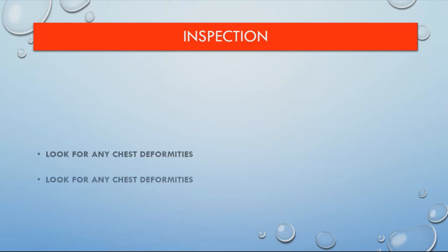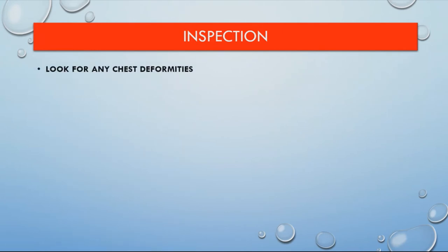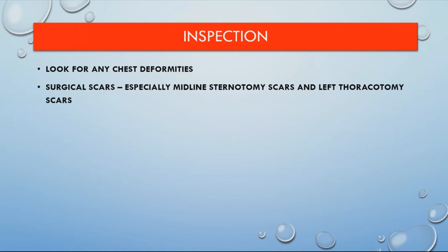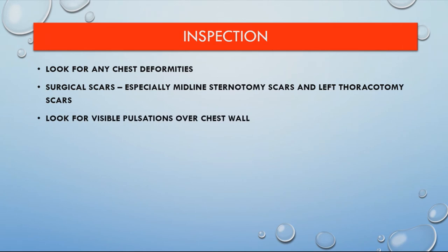Now inspection: first look for chest deformities such as pectus excavatum, pectus carinatum, barrel-shaped chest, or any other deformities. Then look for surgical scars, especially midline sternotomy scars and left thoracotomy scars. Finally, look for visible pulsations of the chest wall — it may be a visible apex beat or visible thrills.